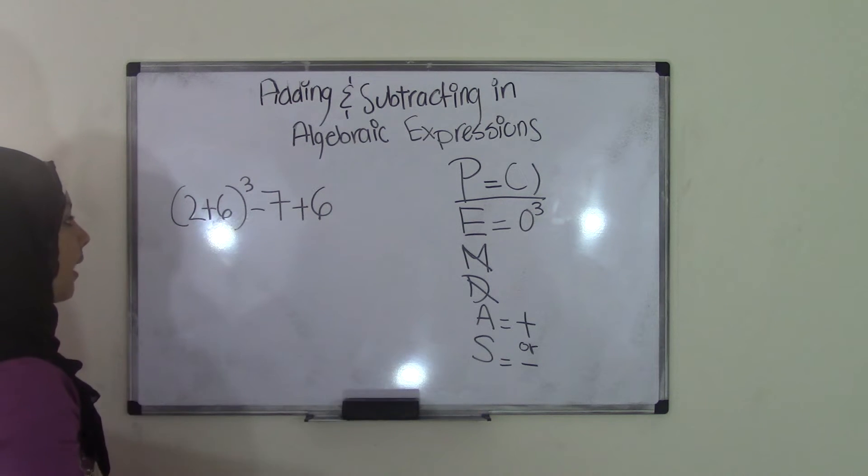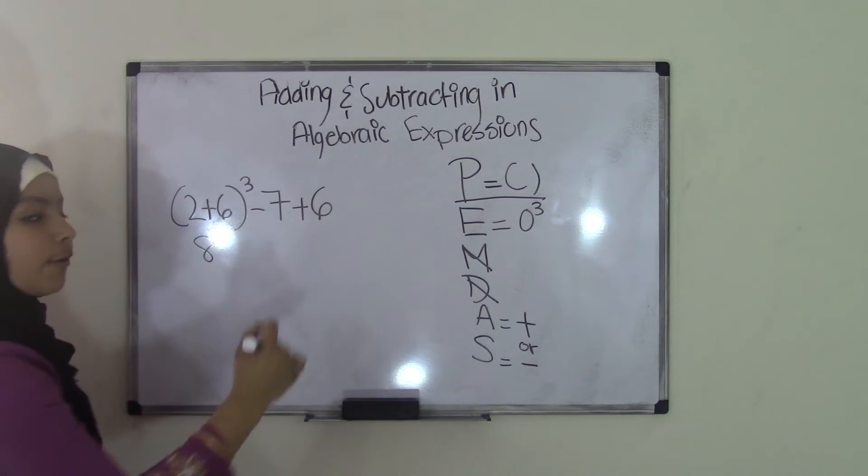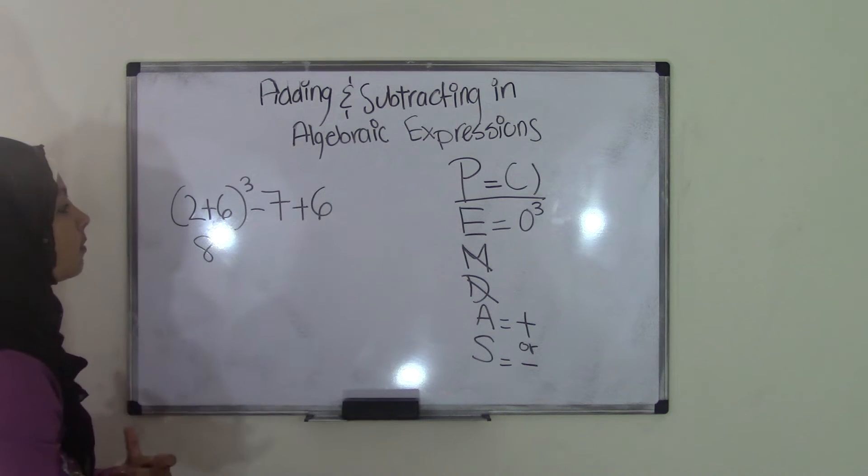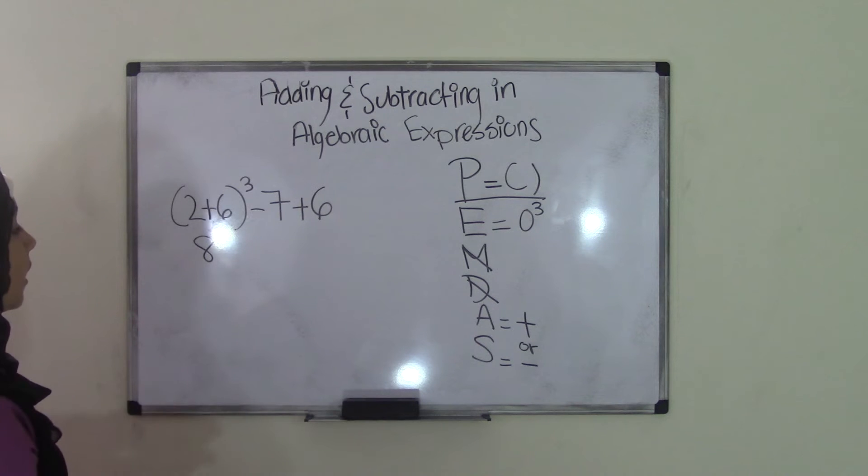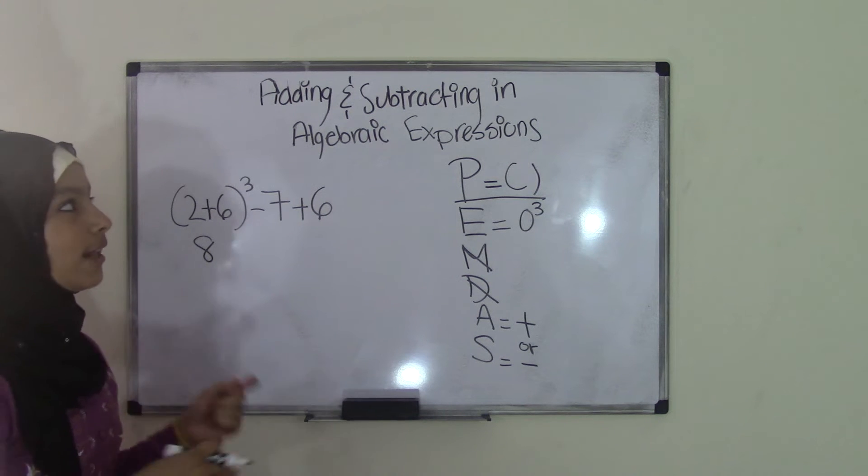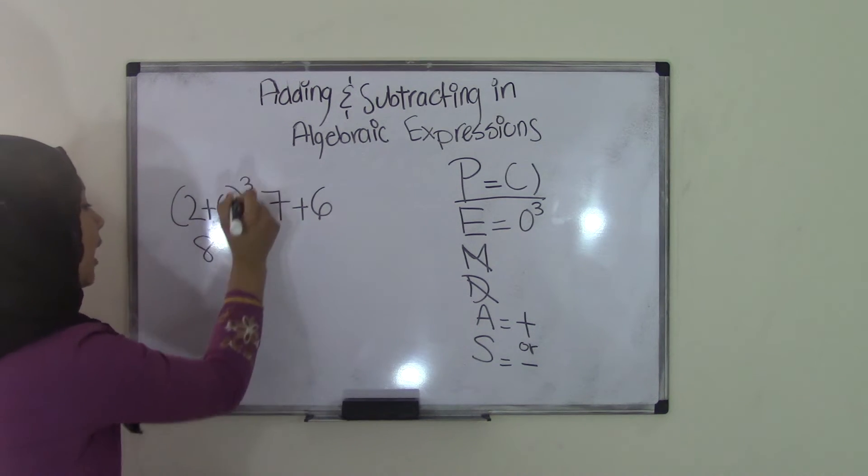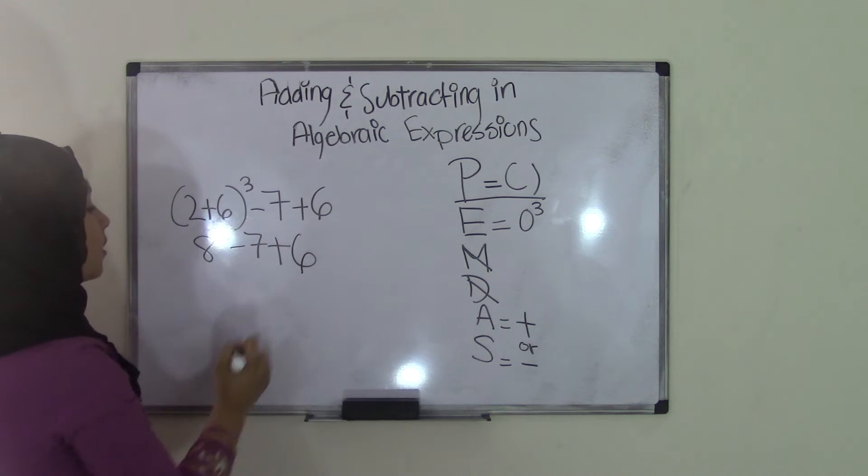Now from kindergarten math, we know that 2 plus 6 is 8, so we're going to write 8, and bring down everything else just as it is. Keep this in mind: the way you write this algebraic expression really matters because if you were to skip around and write this down, then that could change the problem, and your solution could be wrong. So bring it down just as it is. So 8 to the power of 3 minus 7 plus 6. So 2 plus 6 simplifies to 8. We're done with parentheses.